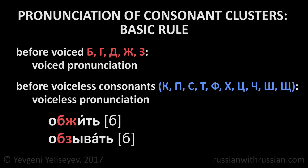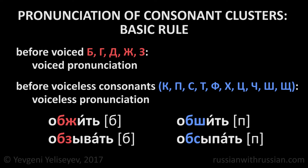Обжить. Обзывать. Before the voiced sounds Ж and З, the letter Б specifies a voiced sound Б — обжить, обзывать. But обшить, обсыпать — before the voiceless sounds Ш and С, the letter Б specifies a voiceless sound П. Обшить. Обсыпать.